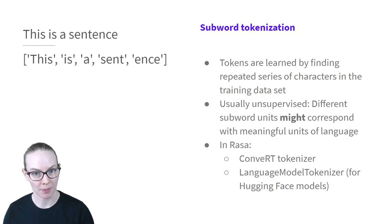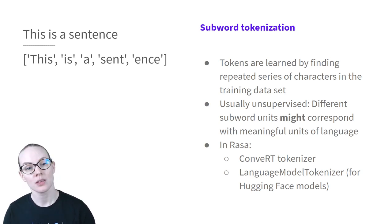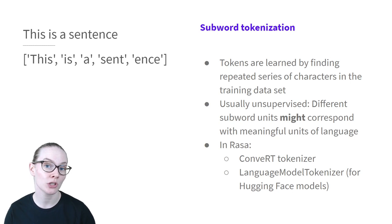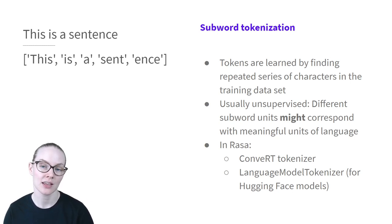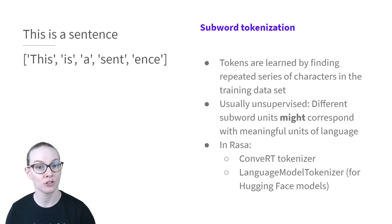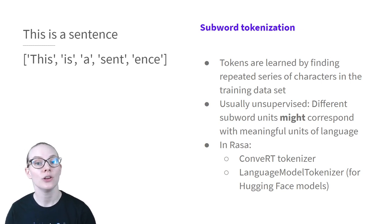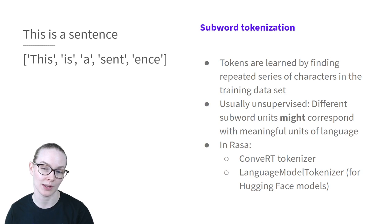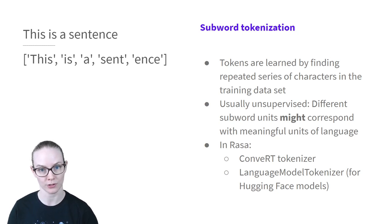Another approach that's gained popularity more recently is subword tokenization. This is a collection of approaches, usually using unsupervised machine learning techniques, that find short sequences of characters that are often repeated together and assigns each of those to be a separate token. Because it's unsupervised, the main drawback of this method is that units identified as tokens may not actually be meaningfully different to a human user.